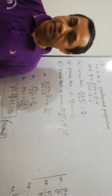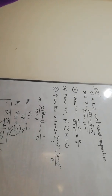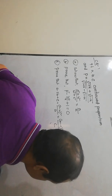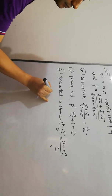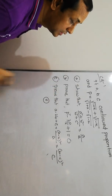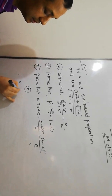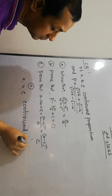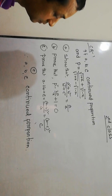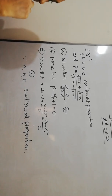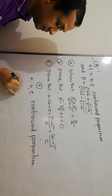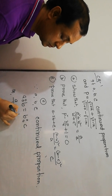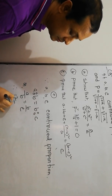I hope all students are clear. Next, Part C. Since A, B, C are in continued proportion, we know by the definition of continued proportion that A is to B equals B is to C, or A/B equals B/C. Then we have B² equals AC.